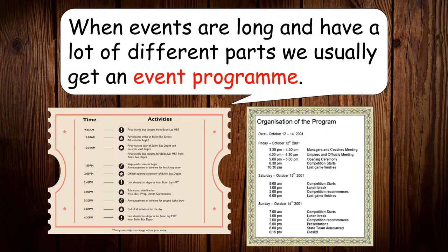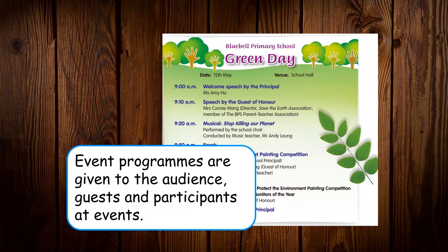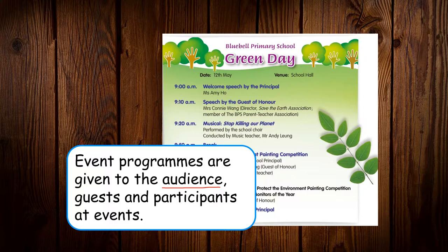Like these two. This one is the example on your book page 27. Event programs are given to the audience, guests, or participants at events. The word 'audience' means the people who come to watch or listen to the show. Guests or participants means people who come to look at the show or to do something at the event.